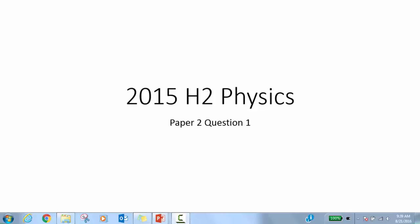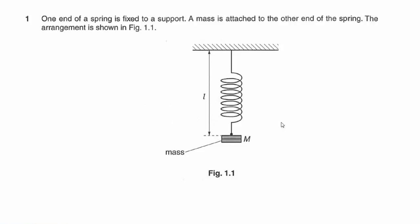In this video, we'll look at 2015 H2 Physics Paper 2, Question 1. This question features a spring of length L with one end having a mass M hung on it.